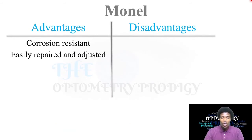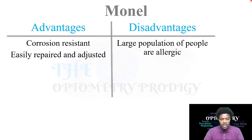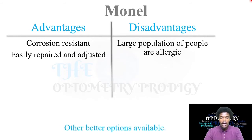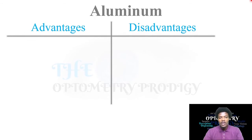Monel — the advantages are corrosion resistance and being easily repaired and adjusted. However, a large portion of the population will be allergic to it because monel has a large composition of nickel, which can cause an allergic reaction such as a rash. As before, there are better options available.